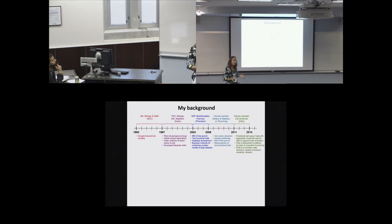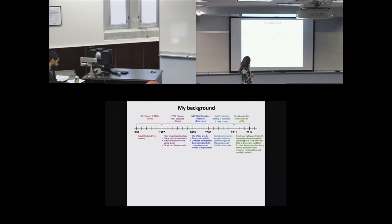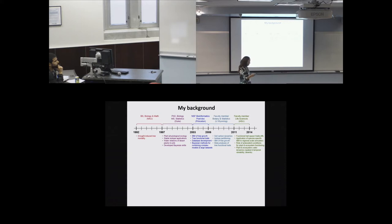I started as a faculty member on a joint appointment in both botany and statistics at University of Wyoming. I recruited postdocs and others who brought new expertise, which allowed me to go into ecosystem ecology. My first postdoc was an expert in soil carbon dynamics — she brought data she hadn't analyzed for her PhD, so we did a lot of modeling with her existing data sets. Currently I'm an associate professor at Arizona State University in the School of Life Sciences, expanding on forest projects, desert projects, and large-scale species-specific individual-based models at regional scales.